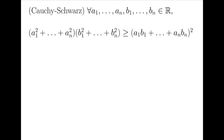There is one thing that we have to bear in mind when using the Cauchy-Schwarz inequality. The statement of the theorem consists of a lot of square terms. As you can see, there are so many square indices.